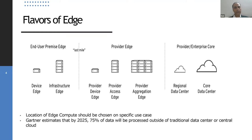Where is the edge computing trend headed? Looking at third-party research reports, in the coming time you will see more and more data processed outside the central cloud or traditional data centers — meaning data will be processed in edge compute centers or on-prem. In some cases, even end devices are getting so powerful that they can process data and make intelligent decisions. The definition of edge is going to change moving forward — as long as you're moving out of the central cloud because of latency reasons, the edge can reside in different places based on the use case.